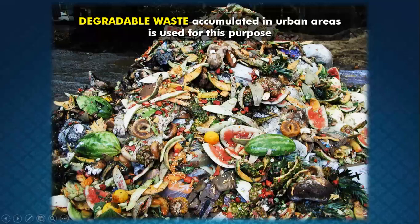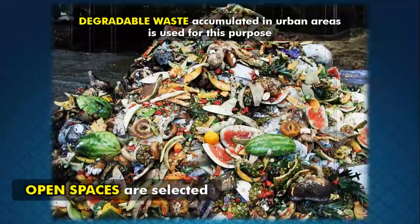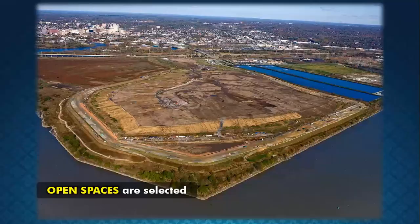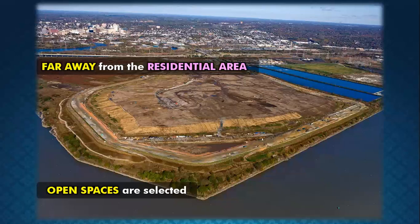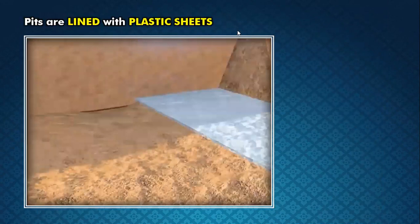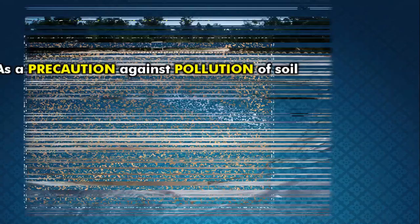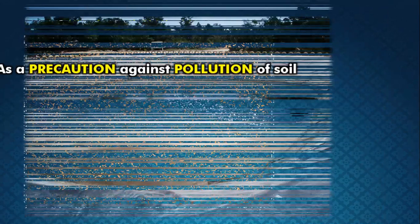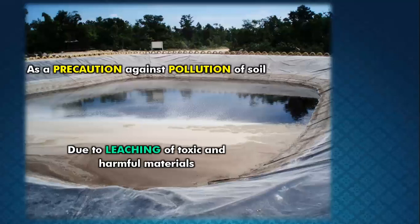Now let's talk about landfill sites. All degradable waste that can be decomposed with the help of microbes is accumulated in urban areas and used for landfill sites. Open spaces are selected, provided they are away from the residential area. Large pits are dug and lined with plastic sheets — this is a precaution against soil pollution — because toxic substances breaking down should not harm the surrounding soil, which can lead to leaching, that is entry of harmful chemicals into the soil.